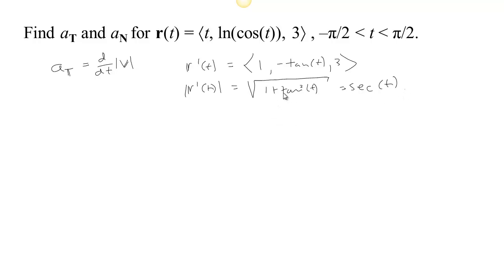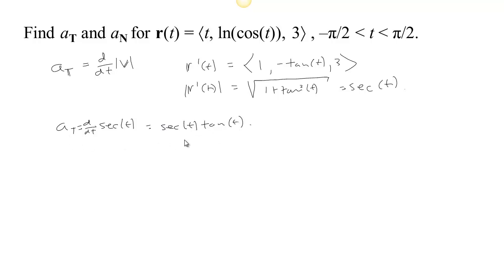Since 1 plus tan² t equals sec² t, the speed is sec t. To find a_T, we take the derivative with respect to t of sec t, which is sec t tan t. So we do have tangential acceleration here, and it changes over time — we are speeding up or slowing down along this curve. So we have a variable a_T.